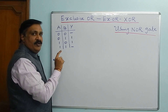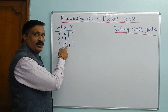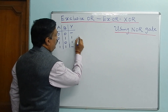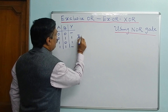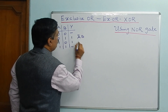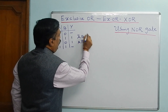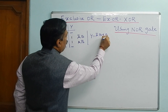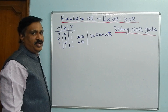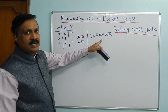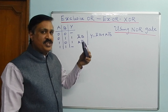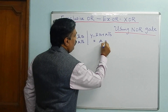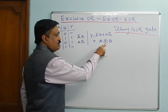That means output will be 1 when either A input or B input is 1. If both the inputs are the same, then it will not give output. The minterms are A-bar·B and A·B-bar, and the equation for this is Y = A'B + AB'. This is the Exclusive OR gate equation.